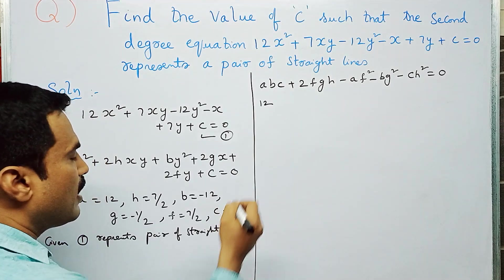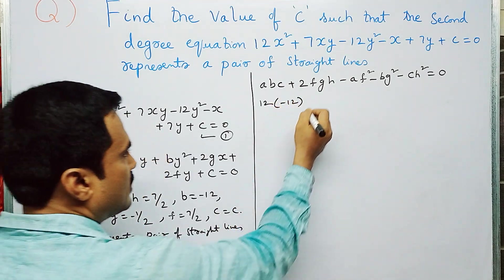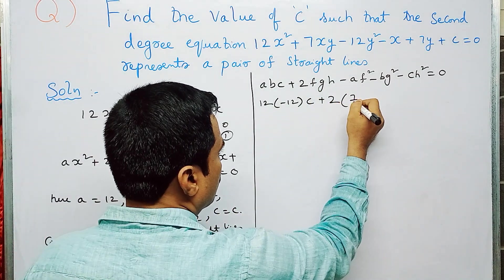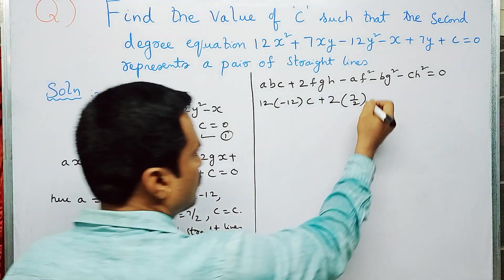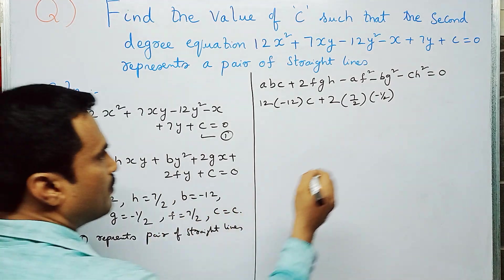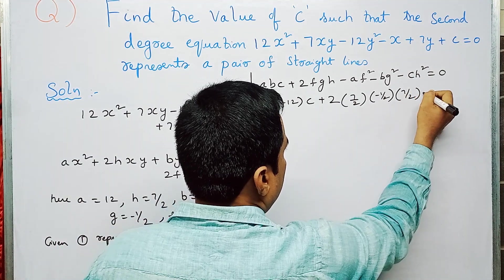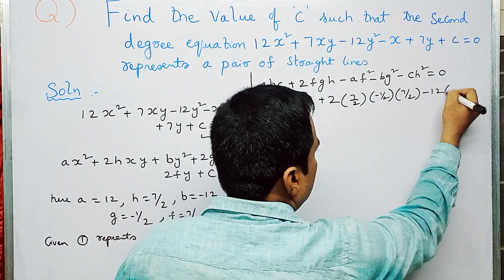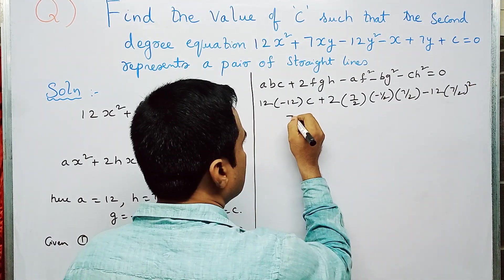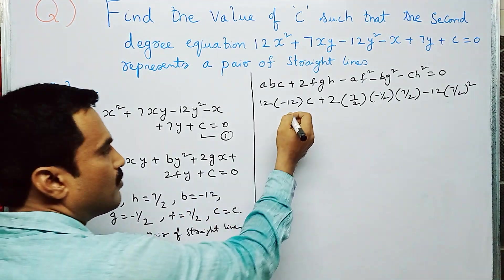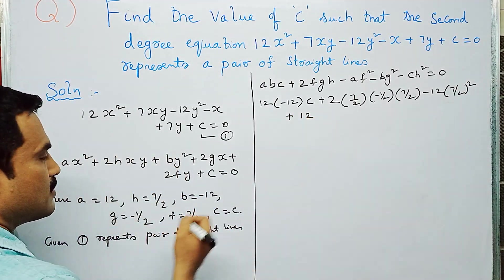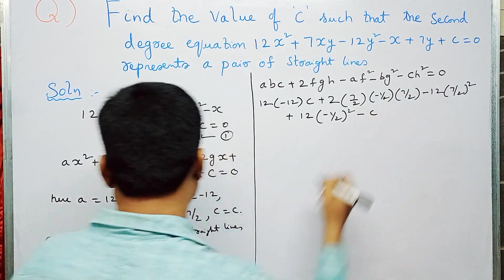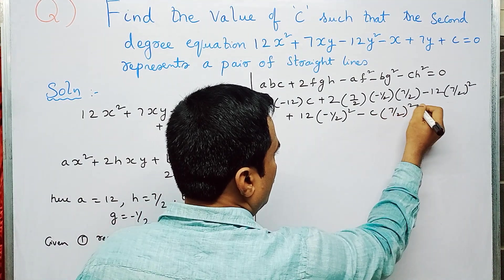Substituting: A = 12, B = -12, C = C, F = 7/2, G = -1/2, H = 7/2. So we get: (12)(-12)(C) + 2(7/2)(-1/2)(7/2) - (12)(7/2)² - (-12)(-1/2)² - C(7/2)² = 0.